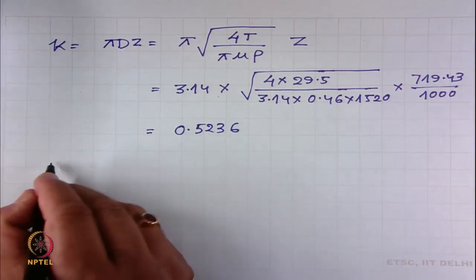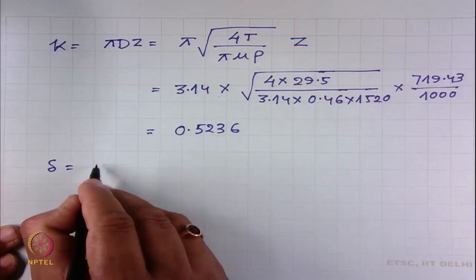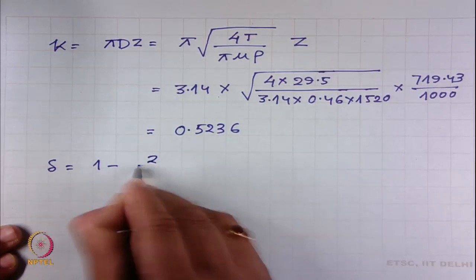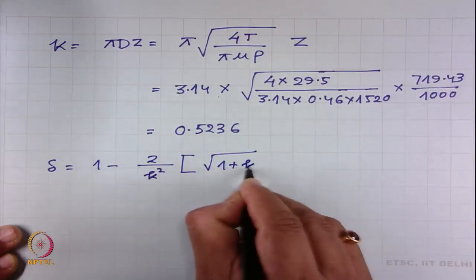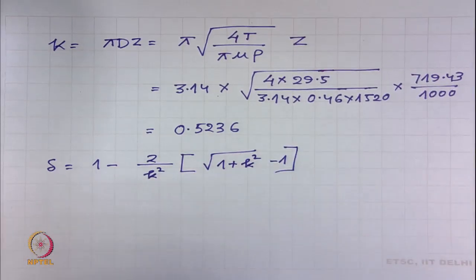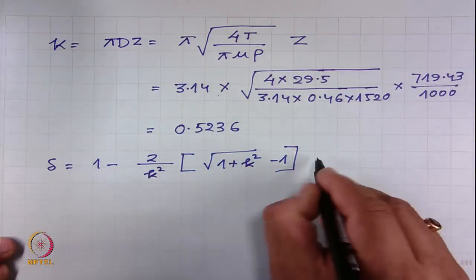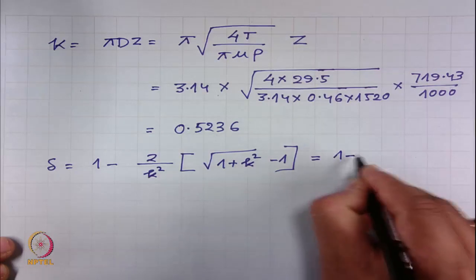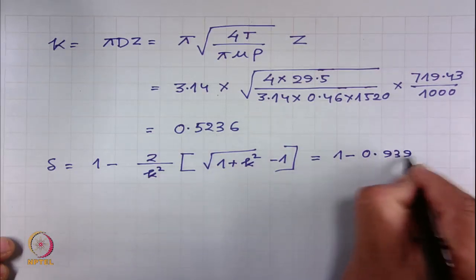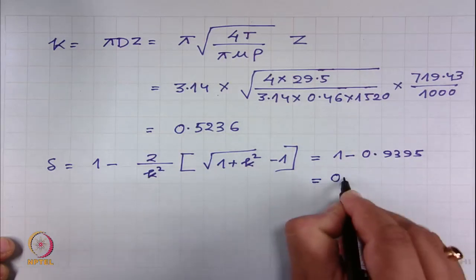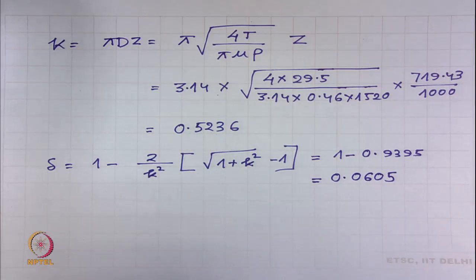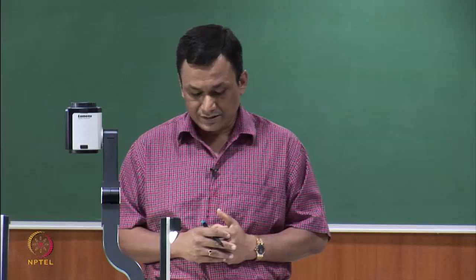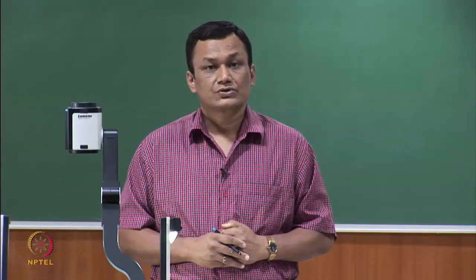Knowing κ = 0.5236, we can determine yarn retraction: 1 minus (√(1 + κ²) − 1). Substituting, we get 1 − 0.9395 = 0.0605. So 6.05 percent will be the retraction. This is the answer.